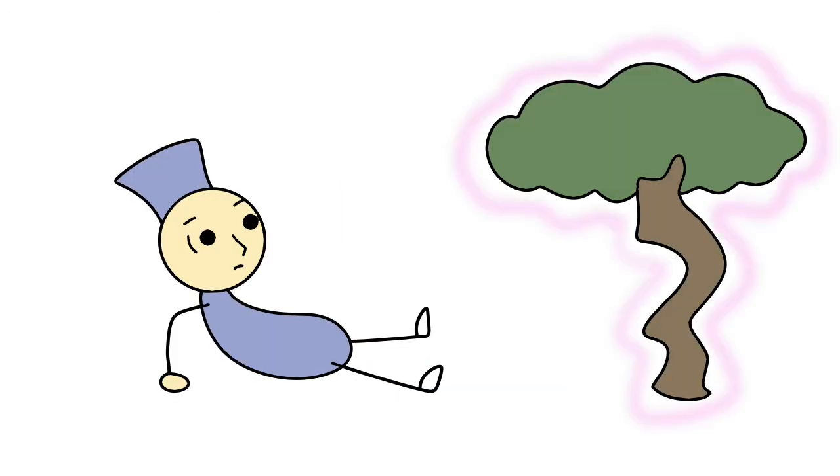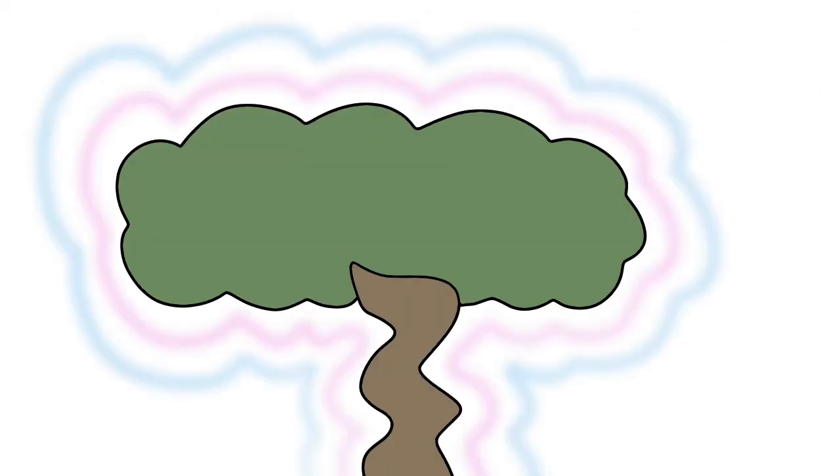On his return journey, Carpenter Shi again passed through the town. The earth god tree appeared to him in a dream and said, What can you possibly compare me to? You want to compare me to a cultivated tree. Let's look at them.